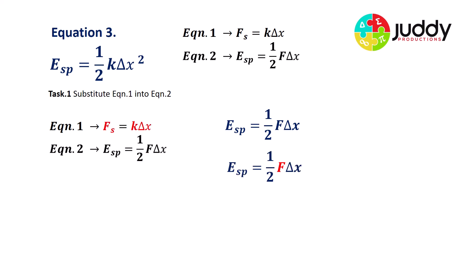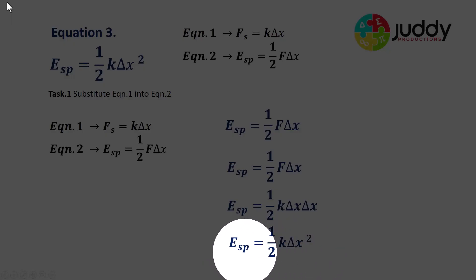We've identified that the force is equal to k delta x and we substitute that into our second equation. So that now reads the strain potential energy equals a half k delta x times delta x. And that can be further simplified as the strain potential energy equals a half k delta x squared. That's our third and final equation.